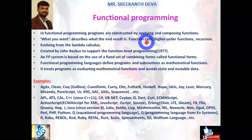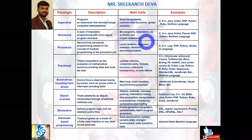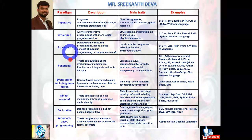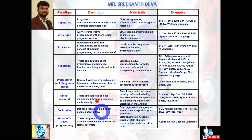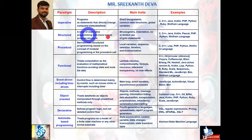Several paradigms exist: imperative, structured, procedural, functional, event-driven, object oriented, declarative, and automata-based programming. Remember: C is an imperative language, C is a structured language, and C is a procedural language — these are the three key points about C language.